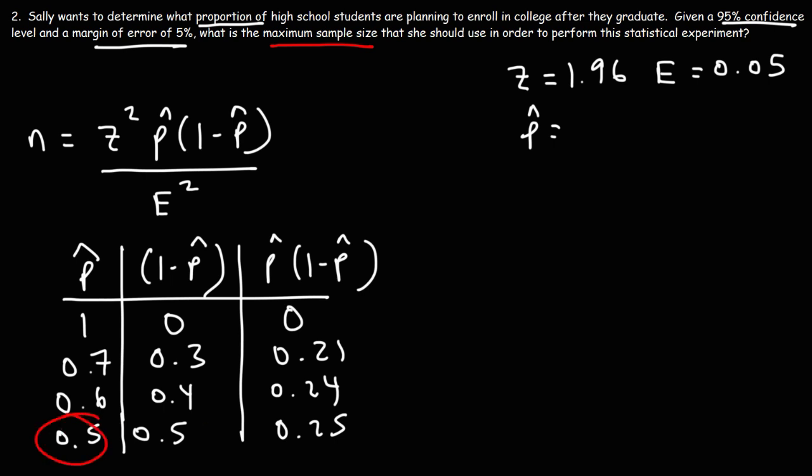So choosing the value of 0.5 would yield the maximum product and thus the maximum sample size. So we're going to use 0.5 for the sample proportion. Now let's plug in everything into this formula.